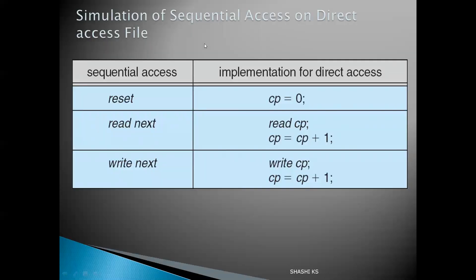If you want to simulate sequential access on a direct access file system — sequential being ordered access and direct being random access — the implementation looks like this: reset to the beginning of the file by setting the current pointer to 0; ReadNext can be implemented by reading at the current pointer position and then incrementing the current pointer by 1; WriteNext can be implemented by writing at the current pointer position and then incrementing the current pointer by 1.